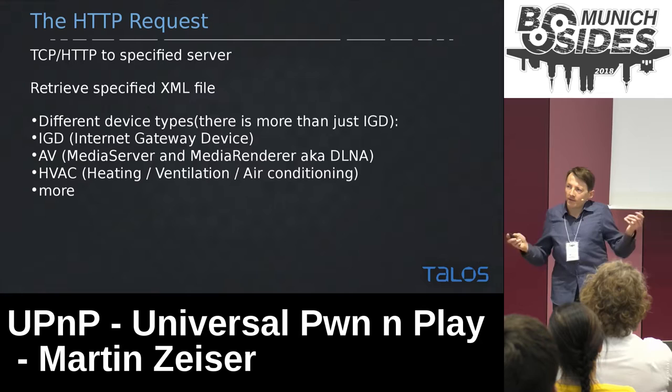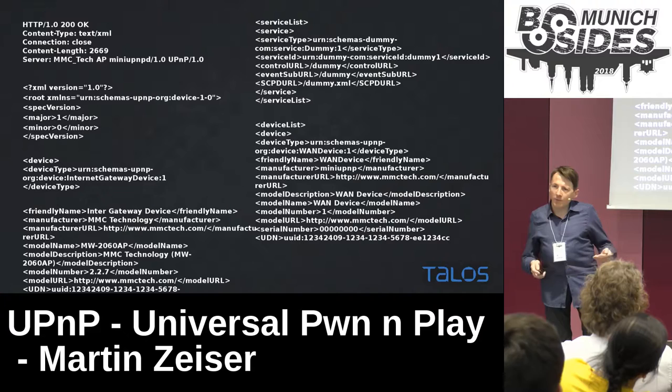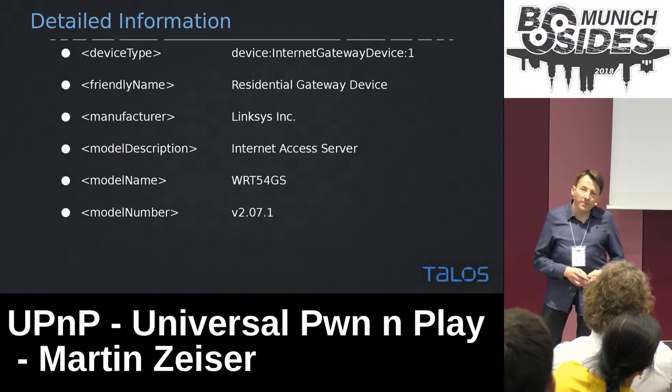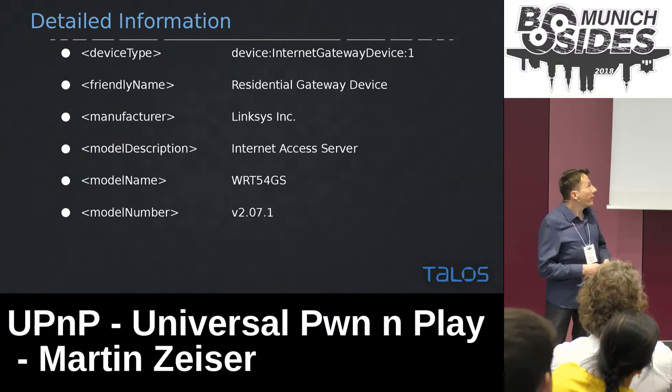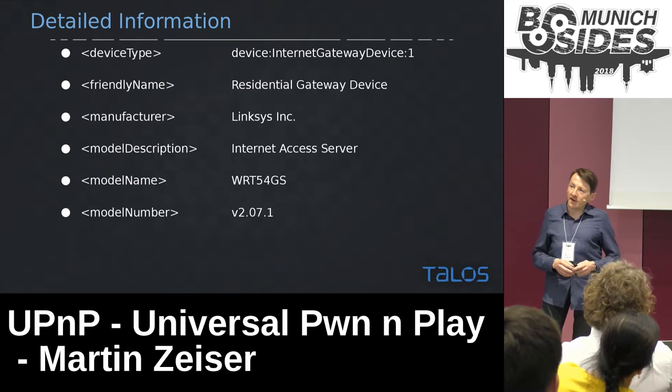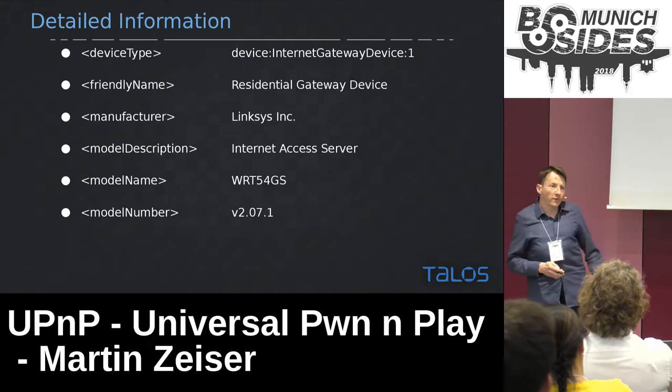You get a whole lot of information in these XML files. In this case, for example, what kind of device is it? It's a residential internet gateway device, manufactured by Linksys. You see the model, you even see the software version. Isn't that amazing if you're an attacker? Knowing in very fine detail what you're talking to — then you can just Google for exploits.